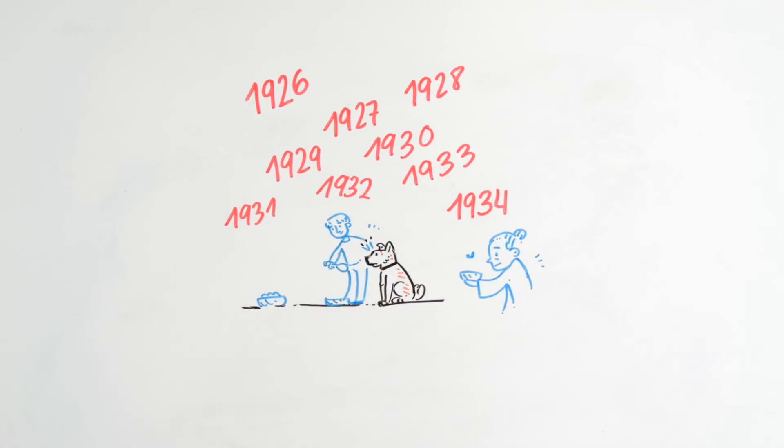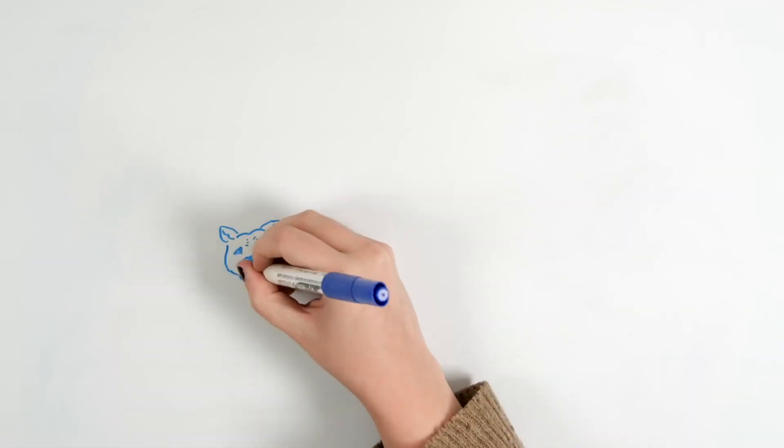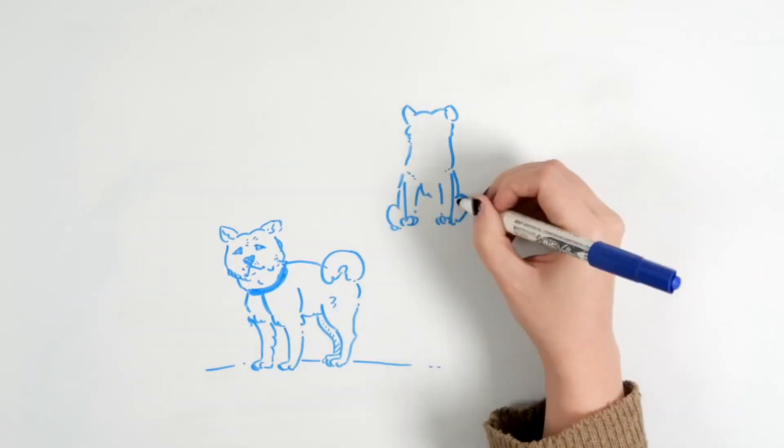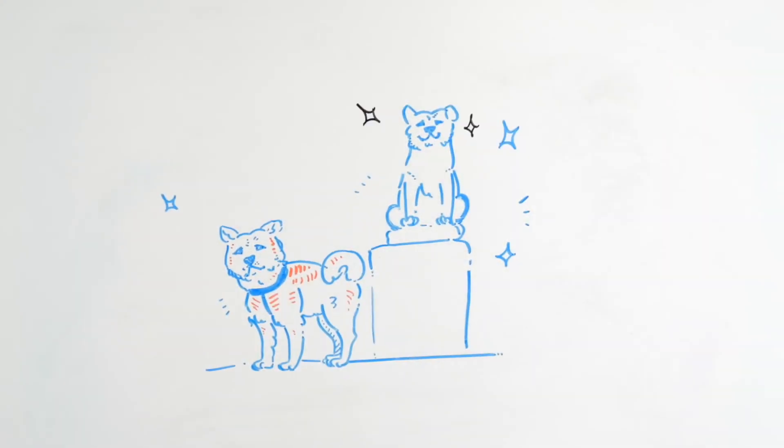They nicknamed him Faithful Dog, Chuken Hachiko. In April 1934, a statue was erected in his honor at Shibuya Station, and Hachiko himself was present on the day it was inaugurated.